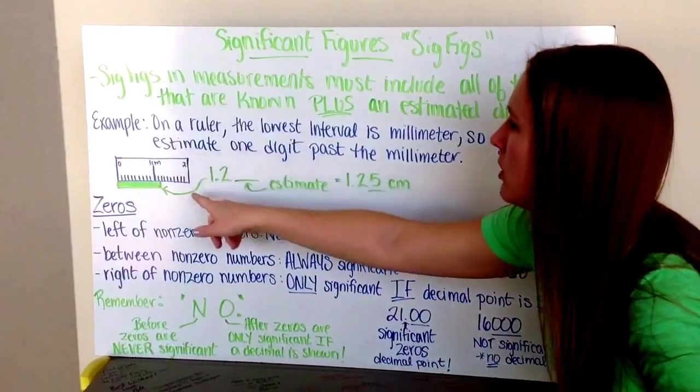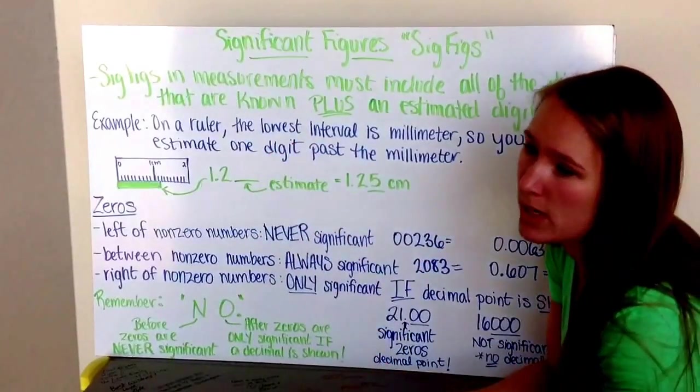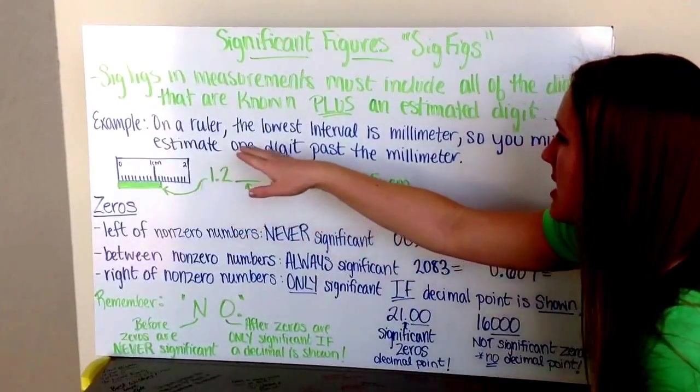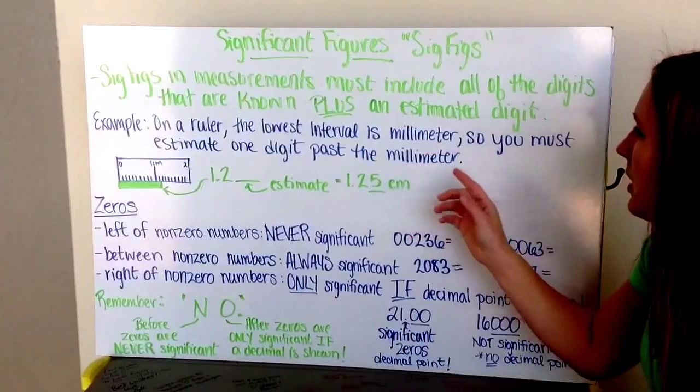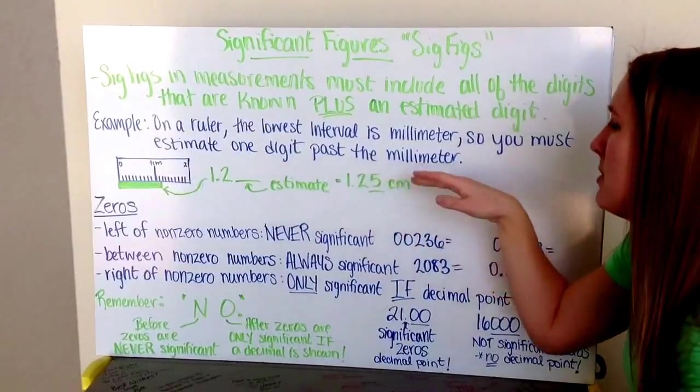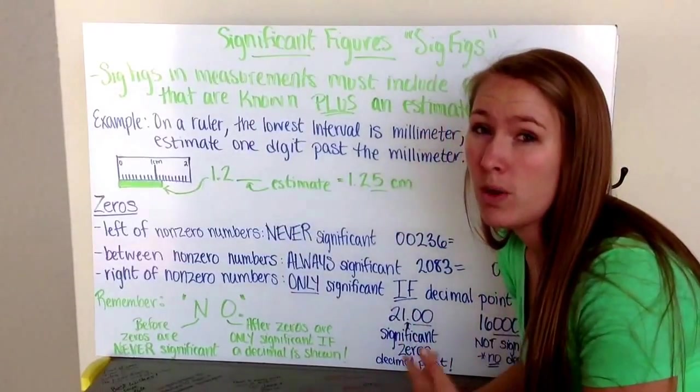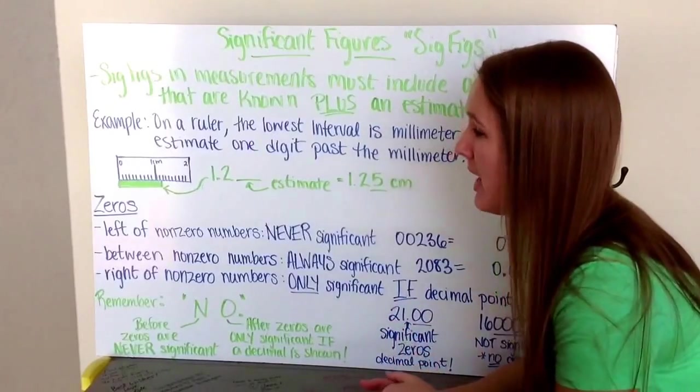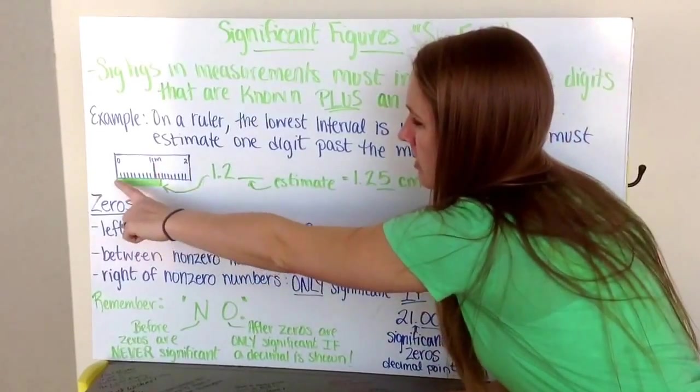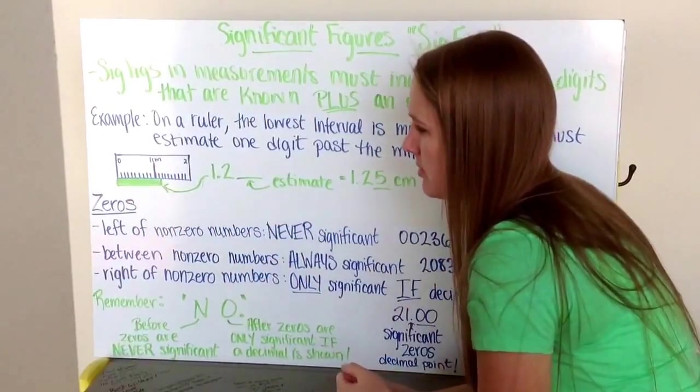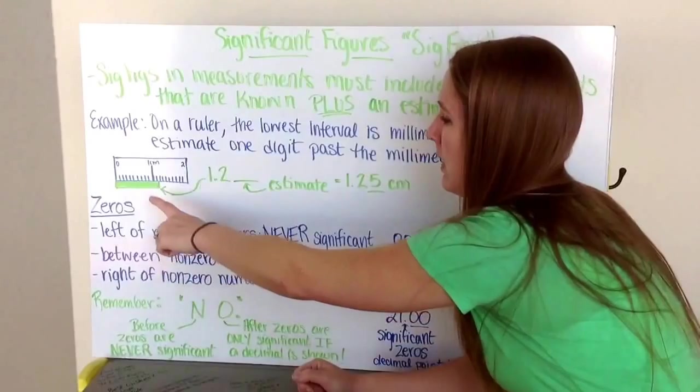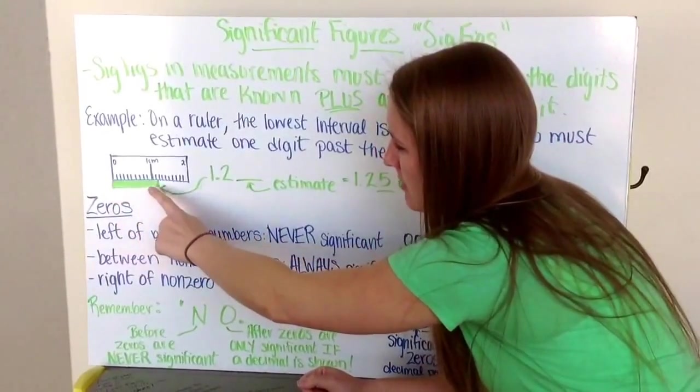For example, we have a ruler. On the rulers that we use, usually on our meter sticks, we have the centimeter side to them of the meters. The lowest interval on them is the millimeter. When we take our measurements using our meter stick, we have to estimate one digit past the millimeter because we need to tell our audience that we know to the millimeter mark and we're going to estimate one place past that. Know that there's 10 millimeters in a centimeter, 100 centimeters in a meter.